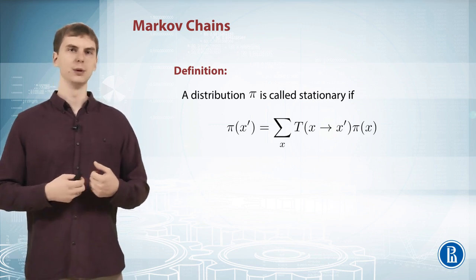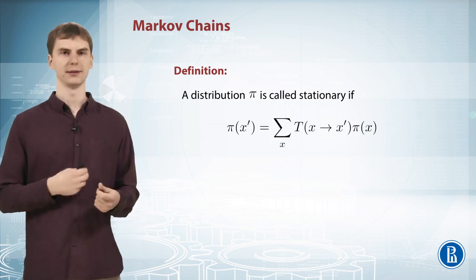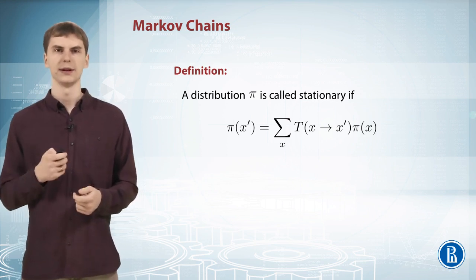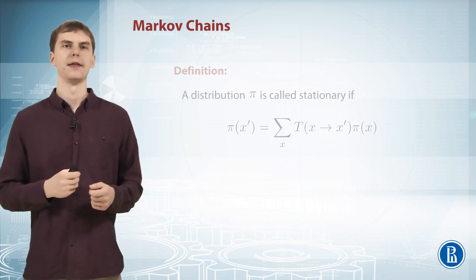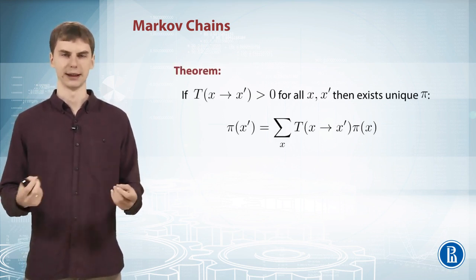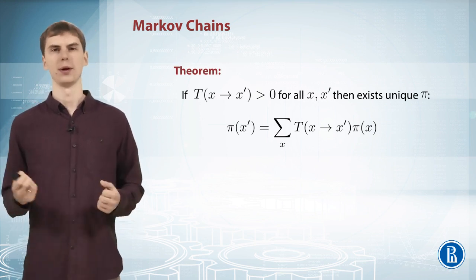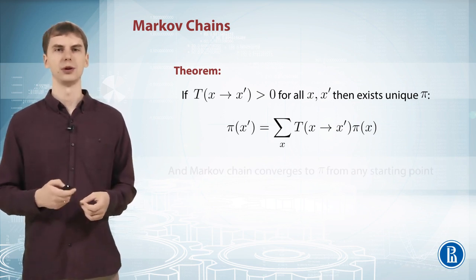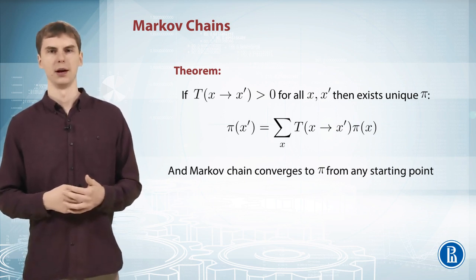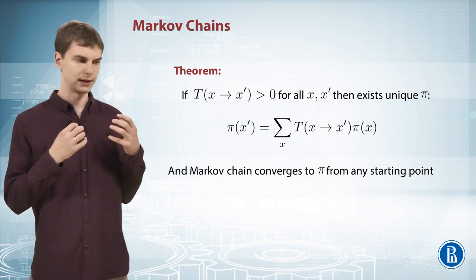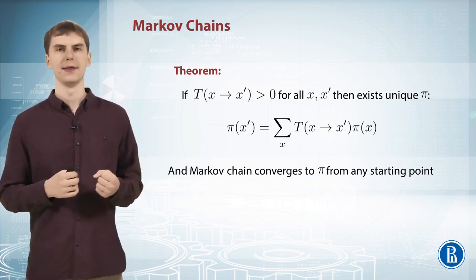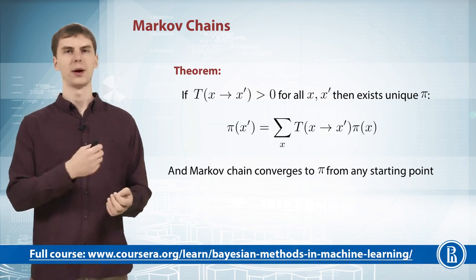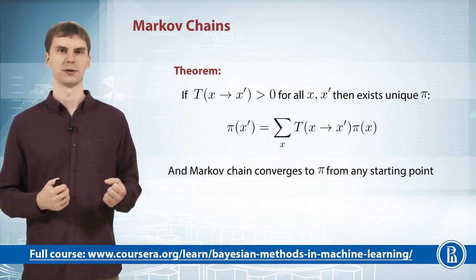There is a nice theorem: if the transition probability is non-zero for any two states — meaning we can jump from any state to any other with non-zero probability — then there exists a unique stationary distribution π, and the chain will converge to π from any starting point. So if we build a Markov chain with non-zero transition probabilities whose stationary distribution is exactly the distribution we want to sample from, then no matter where we start, simulating the chain long enough will eventually yield samples from the desired distribution π.